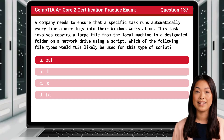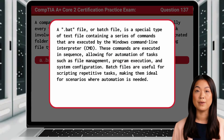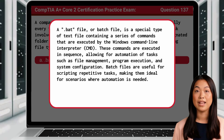The answer is A. .bat. A .bat file, or batch file, is a special type of text file containing a series of commands that are executed by the Windows command line interpreter. These commands are executed in sequence, allowing for automation of tasks such as file management, program execution, and system configuration.